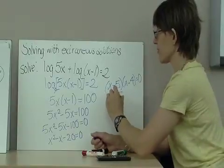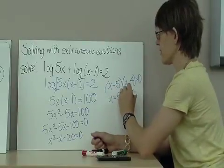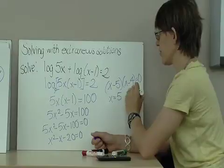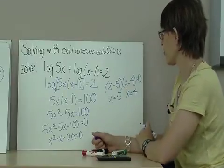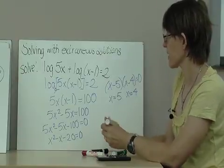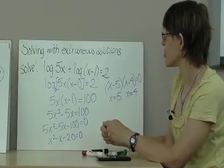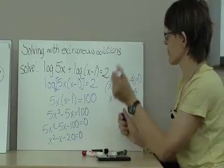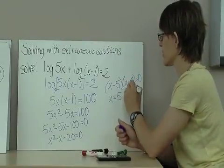This can be factored into x minus 5 times x plus 4 equals 0. So x could be equal to 5 or x equals negative 4. Now, in this case, we do want to go back and check, I'm sorry, x plus 4 there. x equals negative 4.